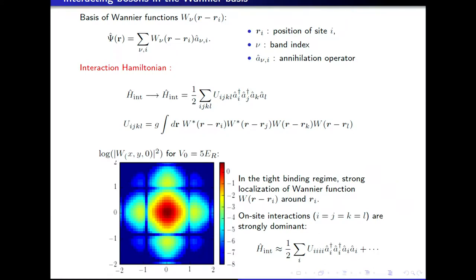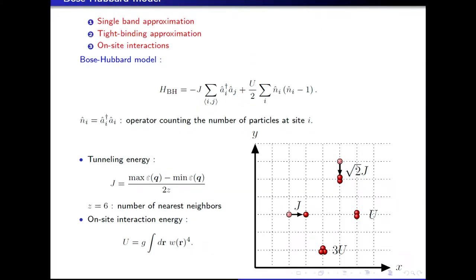Here as well, you can make use of the localized nature of the Wannier function, which corresponds to i equal to j equal to k equal to l — all four field operators on the same site. This follows from the very localized nature of the Wannier function around one given site. So the interaction Hamiltonian can be approximated to a very good approximation by local terms involving only the local density, with all other matrix elements smaller by one, two, or three orders of magnitude. This leaves us with the much simplified Bose-Hubbard model, where two competing terms describe tunneling through the lattice with energy J, connecting only nearest neighbors, and an on-site energy penalty U for having two atoms on the same site. I will now discuss the ground state consequences when cold bosons are loaded into the optical lattice.